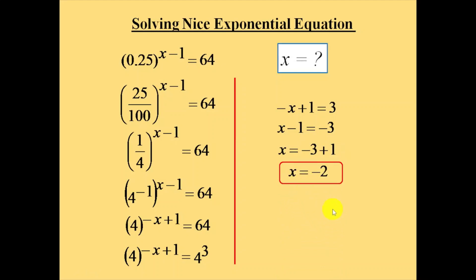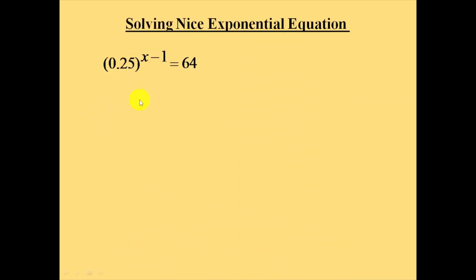Now let's verify the value of x equals minus 2 by substituting it back into the original equation. Substituting minus 2 gives 0.25 to the power of (minus 2 minus 1), which equals 0.25 to the power of minus 3, and this should equal 64.